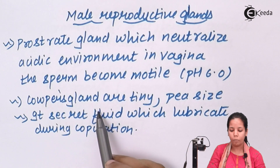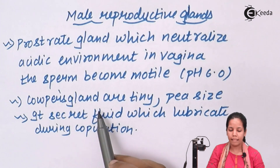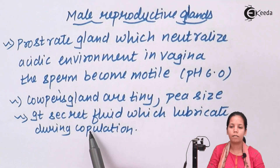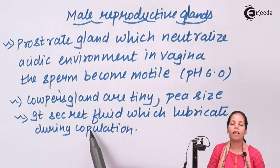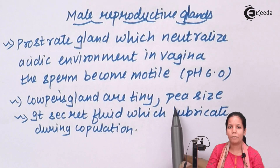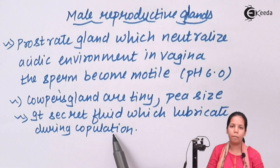The next gland is the corpus gland, also known as the bulbo-urethral gland. It is an exocrine gland and is a tiny P-shaped gland. It secretes a mucus-like substance that lubricates during copulation or mating of the sperm and the egg.